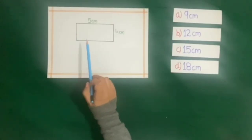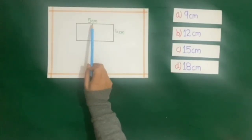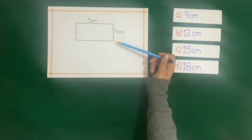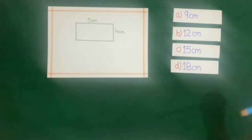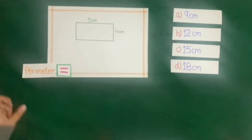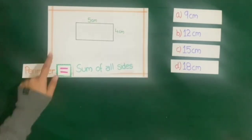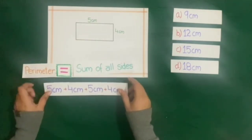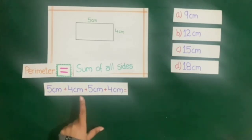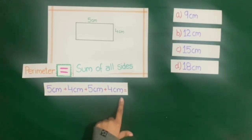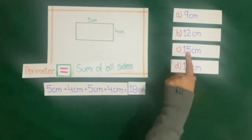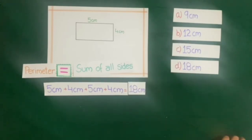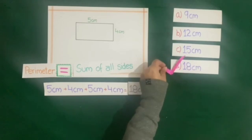Now a rectangle is given with length of 5 cm and breadth of 4 cm. We will find the perimeter of this rectangle. Four answers are given and we will choose the correct answer. Perimeter is equal to sum of all sides, so 5 cm plus 4 cm plus 5 cm plus 4 cm, which is equal to 18 cm. The correct answer is D, that is 18 cm.